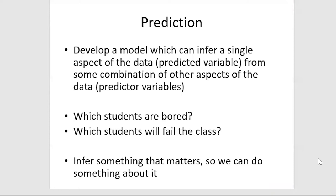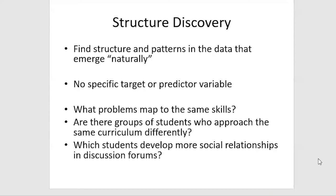Things like which students are bored, or which students will fail the class. Another big category is structure discovery: finding structures and patterns in the data that emerge naturally, with no specific target or predictor variable. Things like what math problems map to the same cognitive skills, whether there are groups of students who approach the same curriculum differently, and which students develop more social relationships in discussion forums.